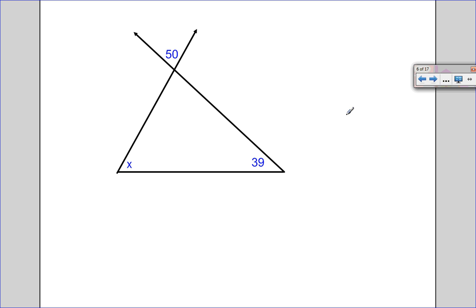Let's solve for X here. You see vertical angles, so that makes this 50. 50 plus 39 plus X equals 180. 89 plus X equals 180. Subtract 89, so X equals 91 degrees.